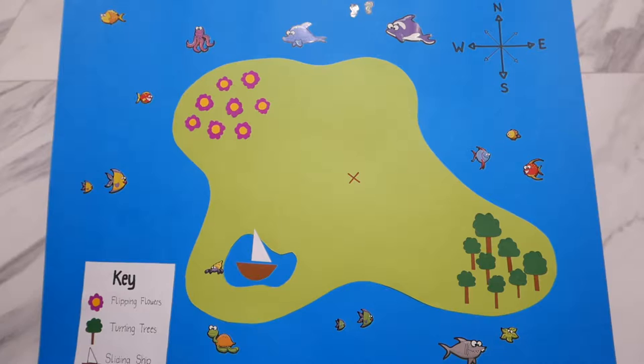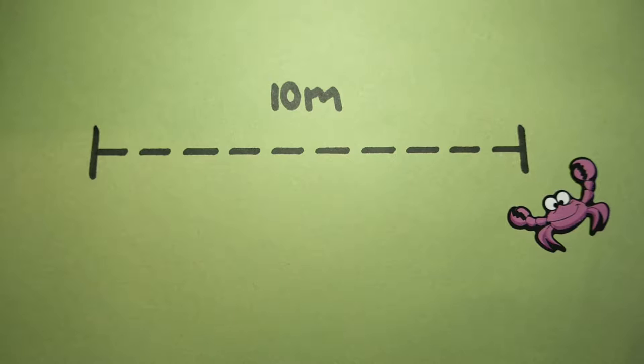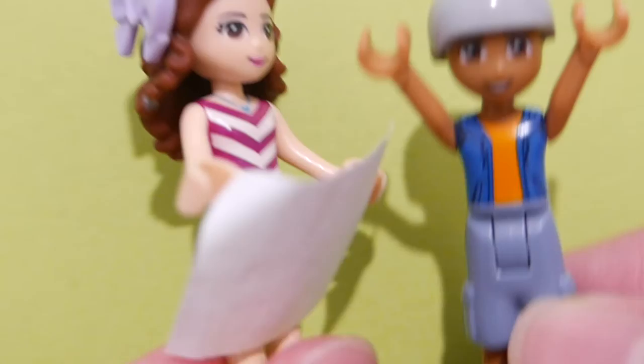Look, I found a map. Let's have a look what's inside. The compass shows us where North, East, South and West are. And the key explains what the symbols represent. Map scale is the relationship between distance on the map and distance in real life.